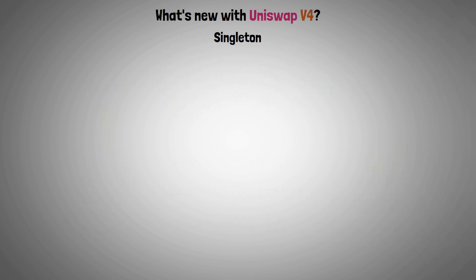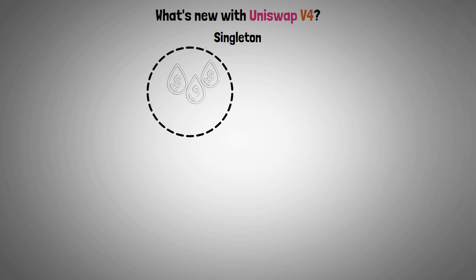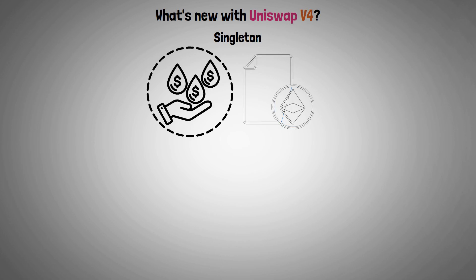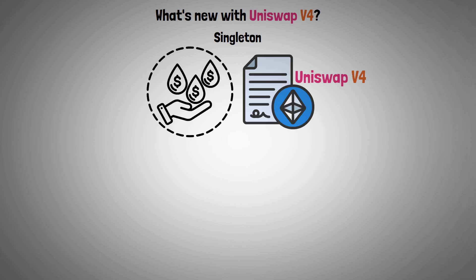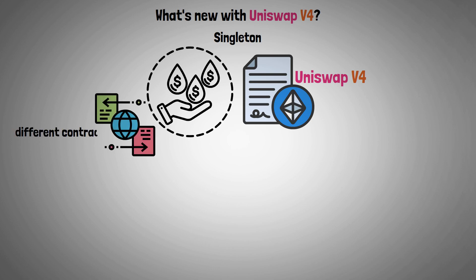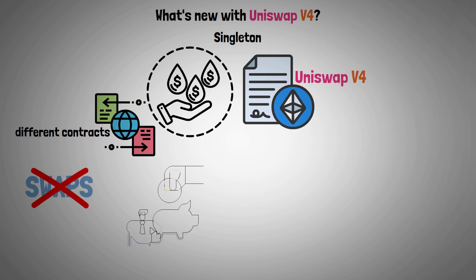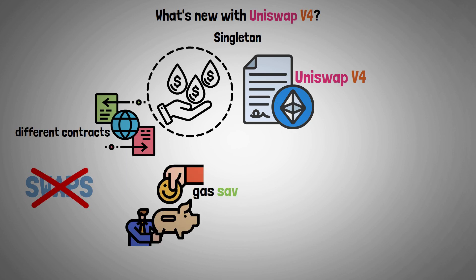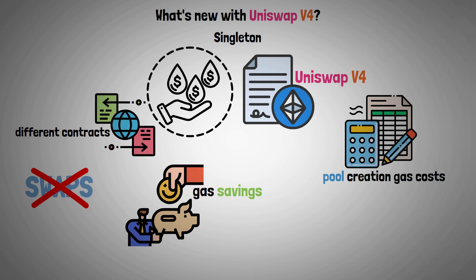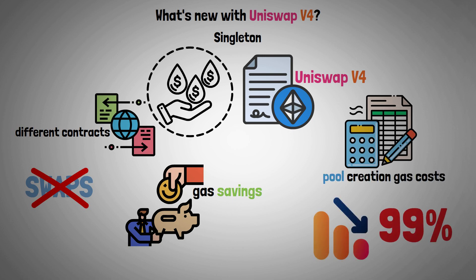Singleton. A significant change in Uniswap V4 is that all pools are held in one contract. Because token transfers between pools with different contracts will no longer require swaps, there will be significant gas savings. According to Uniswap's estimates, pool creation gas costs could be reduced by 99% with Uniswap V4.